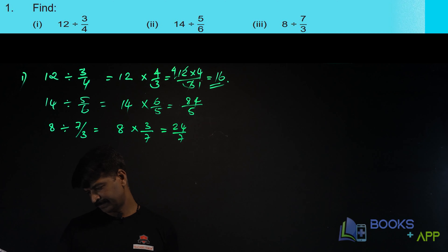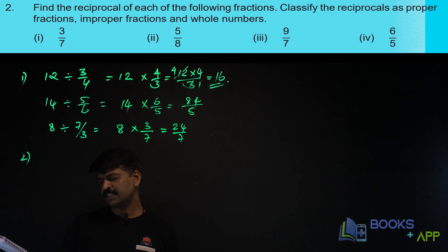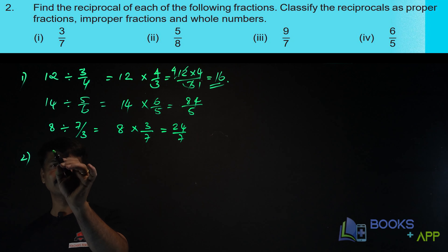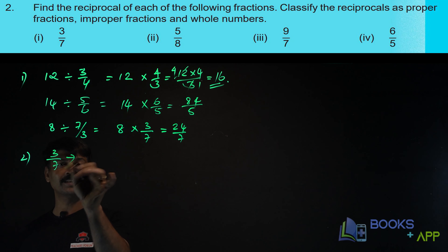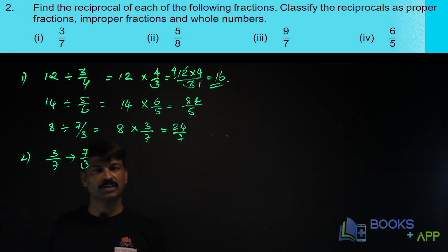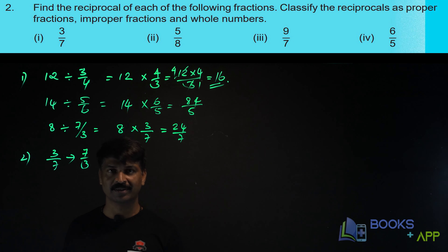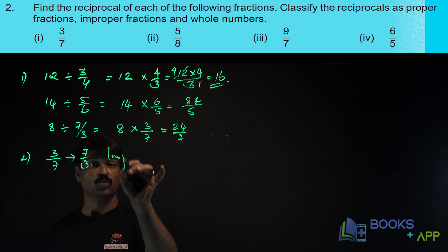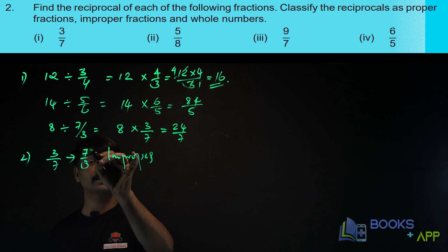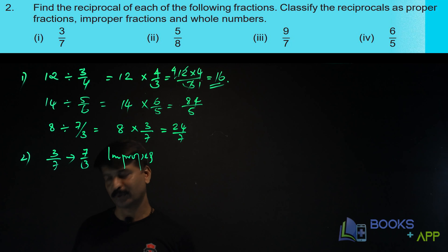Now find the reciprocal and classify it as a proper fraction, improper fraction, or whole number. The first one is 3 by 7. What is the reciprocal of 3 by 7? It is 7 by 3. Is it a proper fraction, improper fraction, or whole number? It is an improper fraction, because the numerator is greater than the denominator.